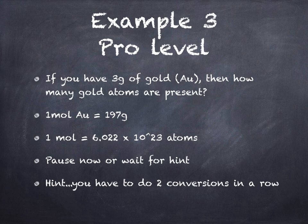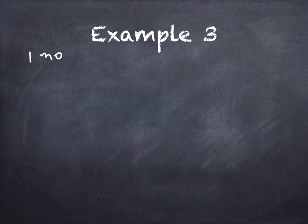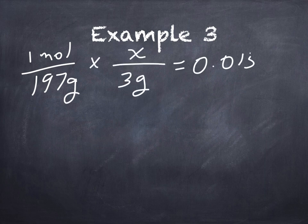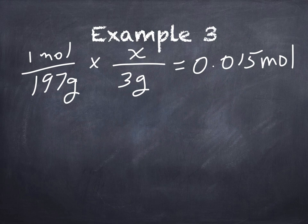Here we go. So first we'll say one mole of gold is 197 grams. And then that's the same as x number of moles if you have three grams. Cross multiply and divide. And you get three grams times one mole divided by 197 grams, which is 0.015 moles. This is common to get decimal points for these things. So don't freak out about that either. That's no big deal. Trust the process. Trust your math. Trust yourself.